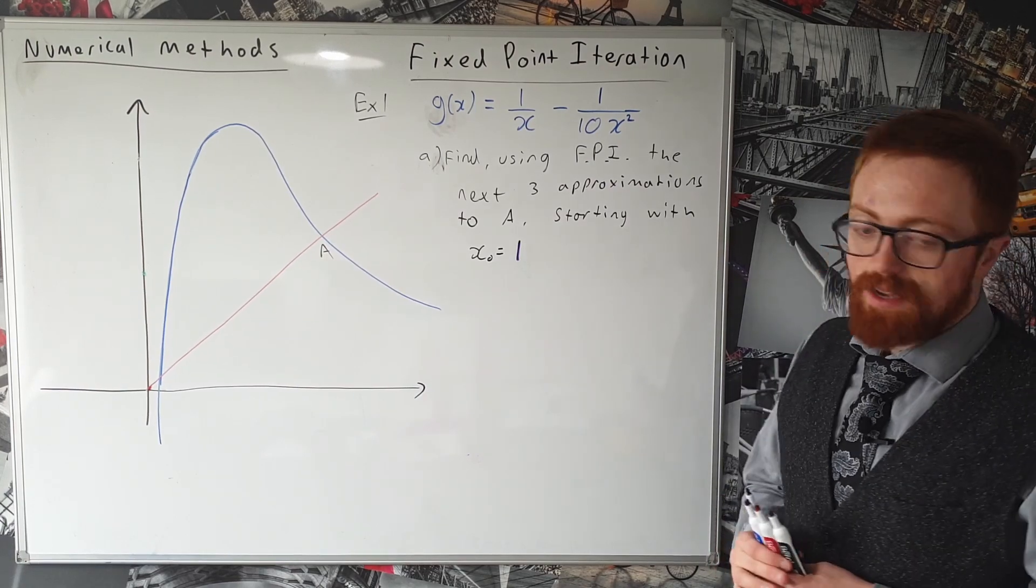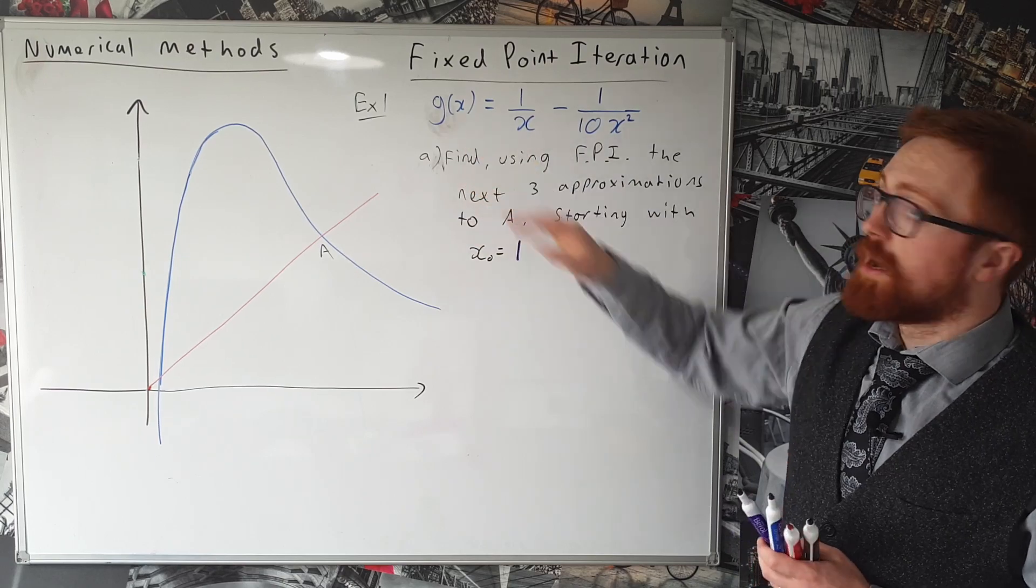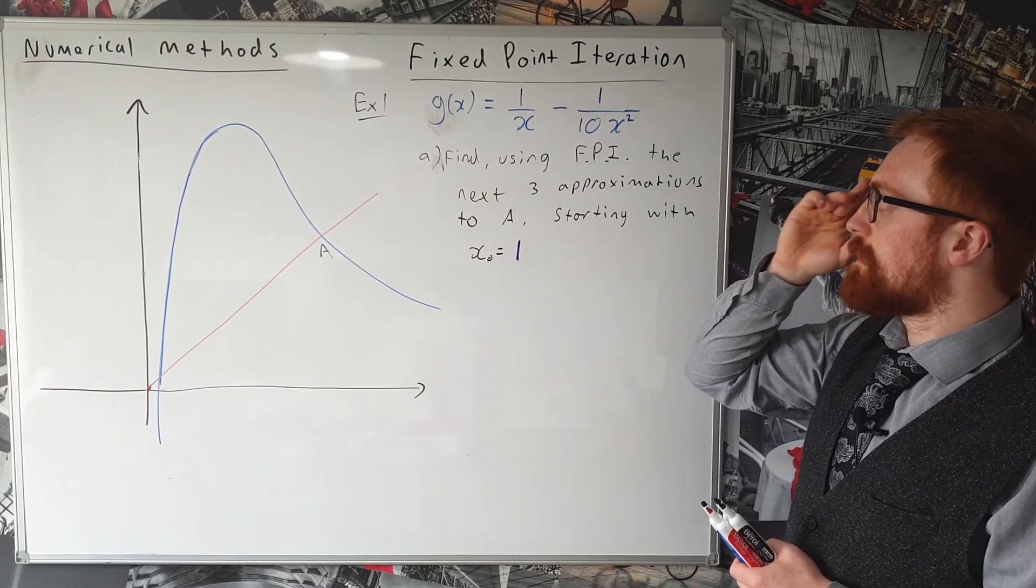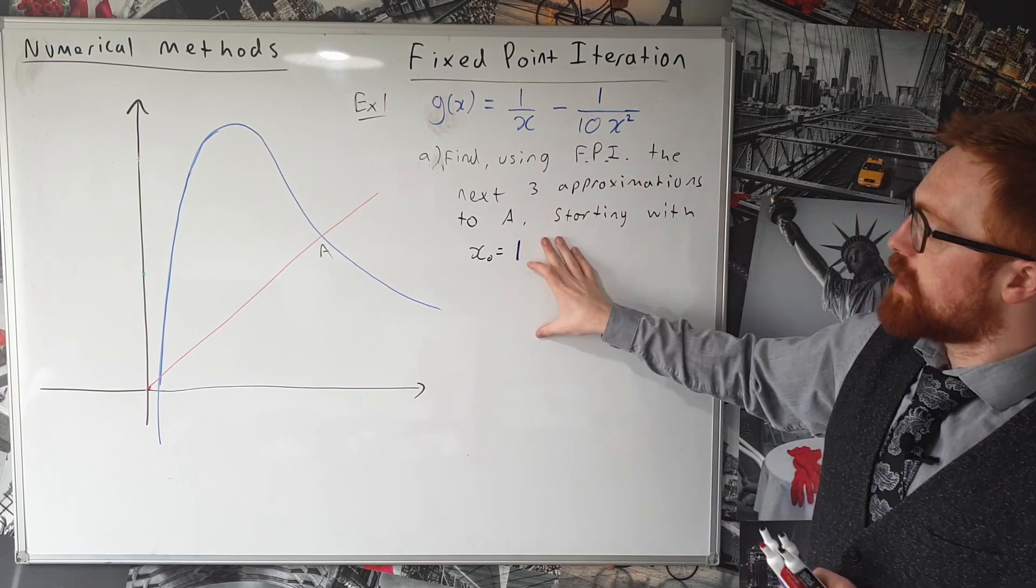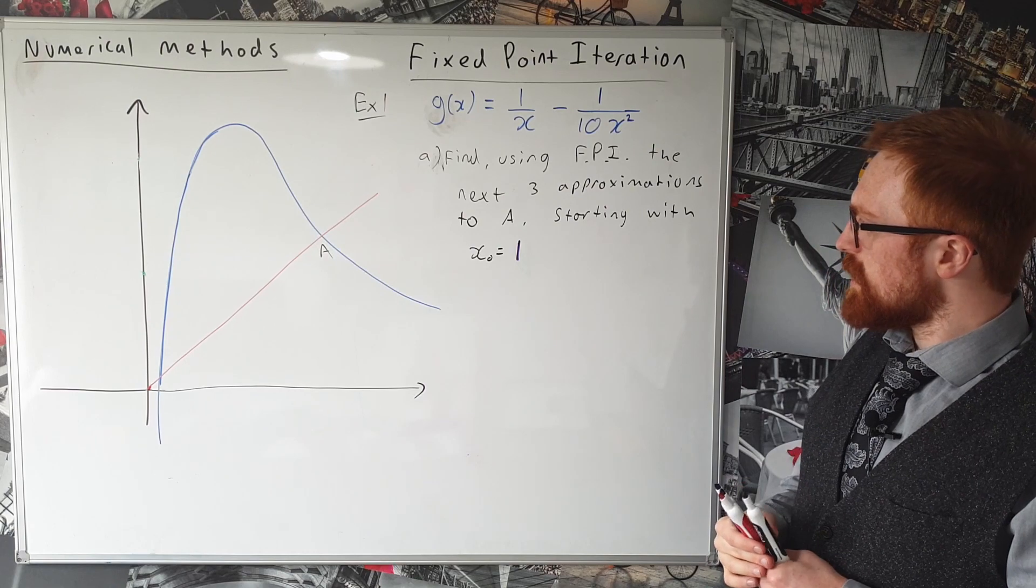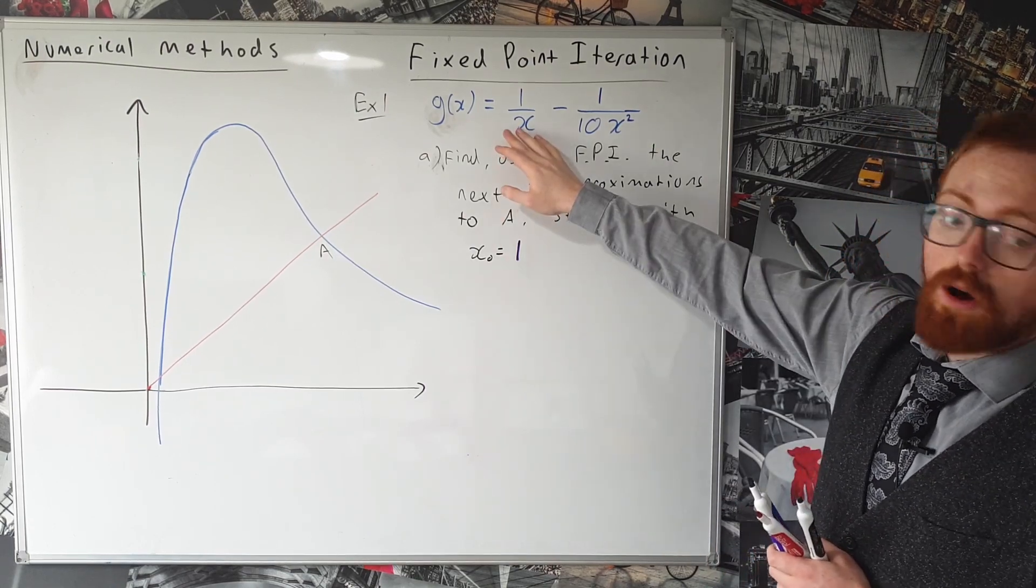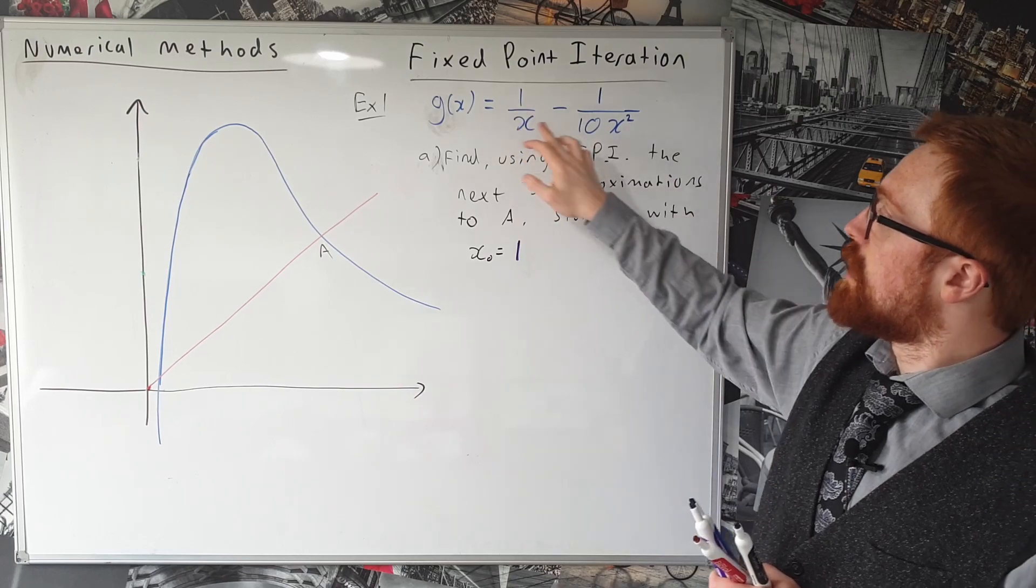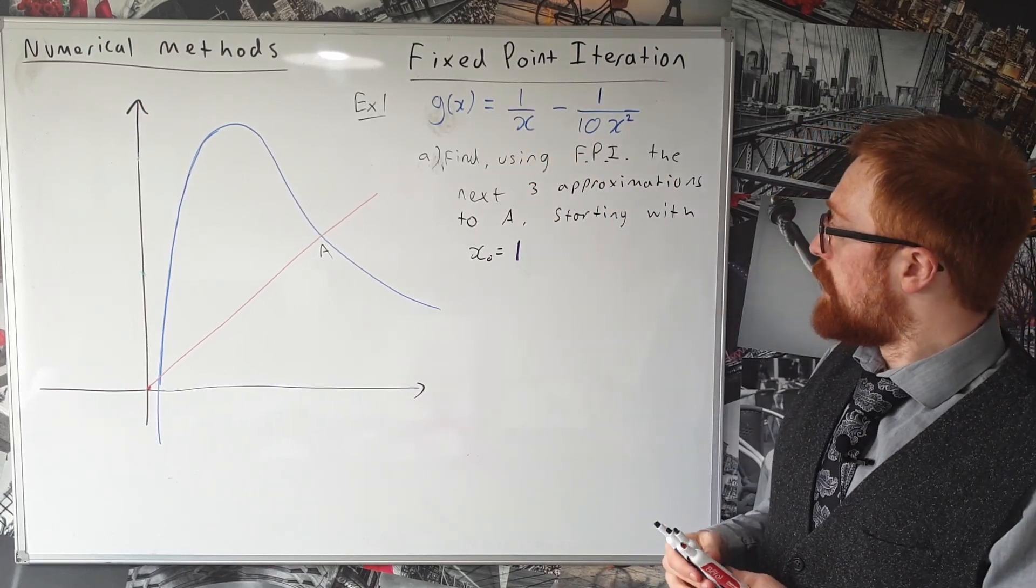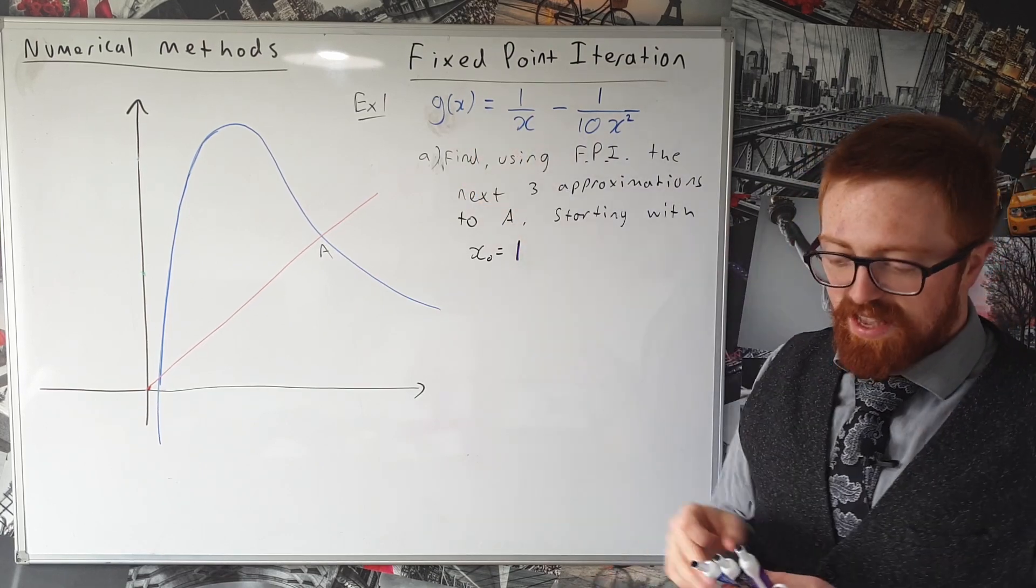Okay so let's look at our first example of exactly how we apply fixed point iteration to a given function. So here we're finding using fixed point iteration the next three approximations. And we're told that we need to start with x_0 is equal to 1 and we're told what the function is: g(x) = 1/x - 1/(10x^2). And so what we're going to do is we simply substitute our value of x_0 into g of x.